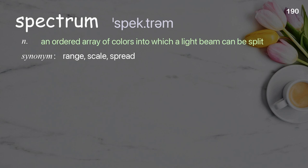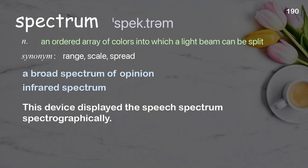Spectrum: an ordered array of colors into which a light beam can be split. Examples: a broad spectrum of opinion; infrared spectrum; this device displayed the speech spectrum spectrographically.